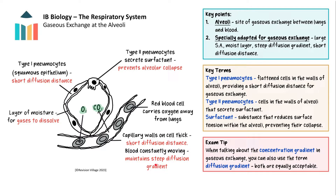Diffusion across the alveoli is efficient as the many millions of alveoli provide a large surface area. A dense network of capillaries surrounds the alveoli, and blood is constantly flowing, so as soon as oxygen diffuses into the blood it is carried away, maintaining a steep diffusion gradient. There are two types of cells in the alveolar walls: type 1 and type 2 pneumocytes. The type 1 pneumocytes are flattened, meaning there is a short diffusion distance across them. This short diffusion distance is also due to the capillary walls being only one cell thick. The type 2 pneumocytes secrete surfactant, which reduces the surface tension of the moist lining of the alveoli to prevent the walls from sticking together.